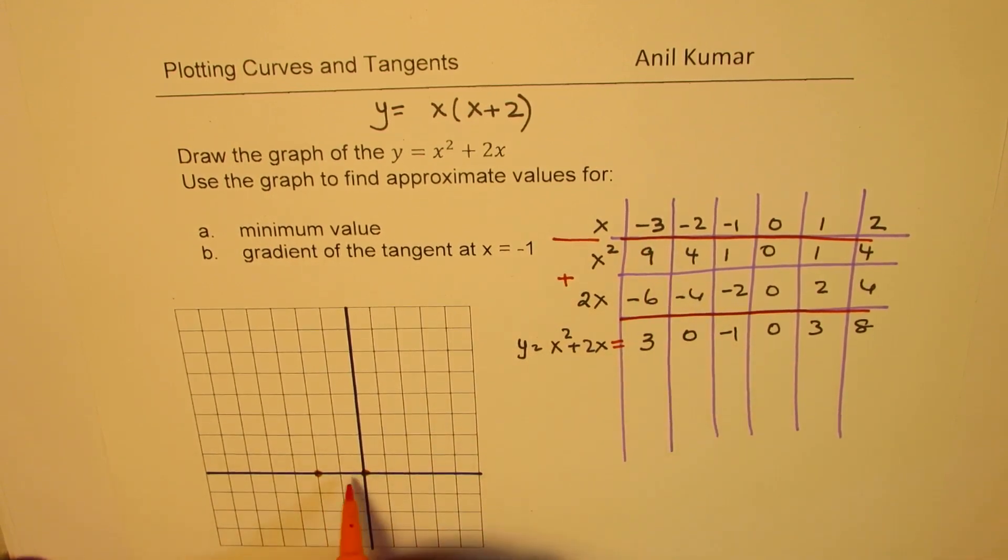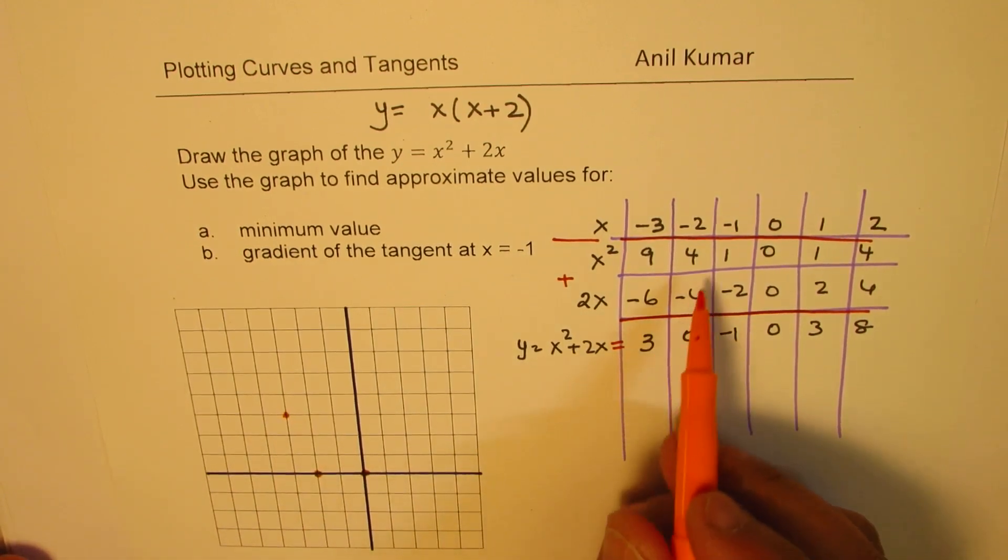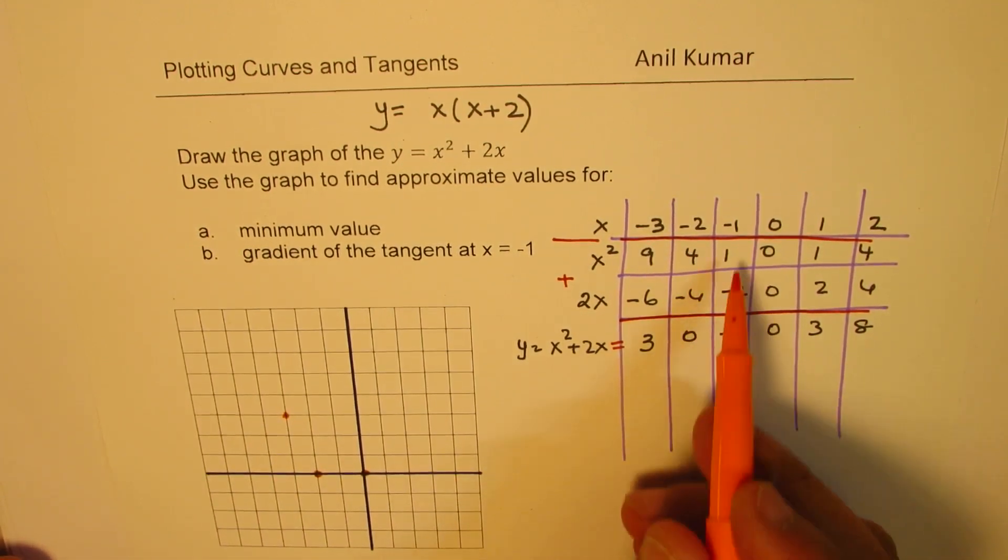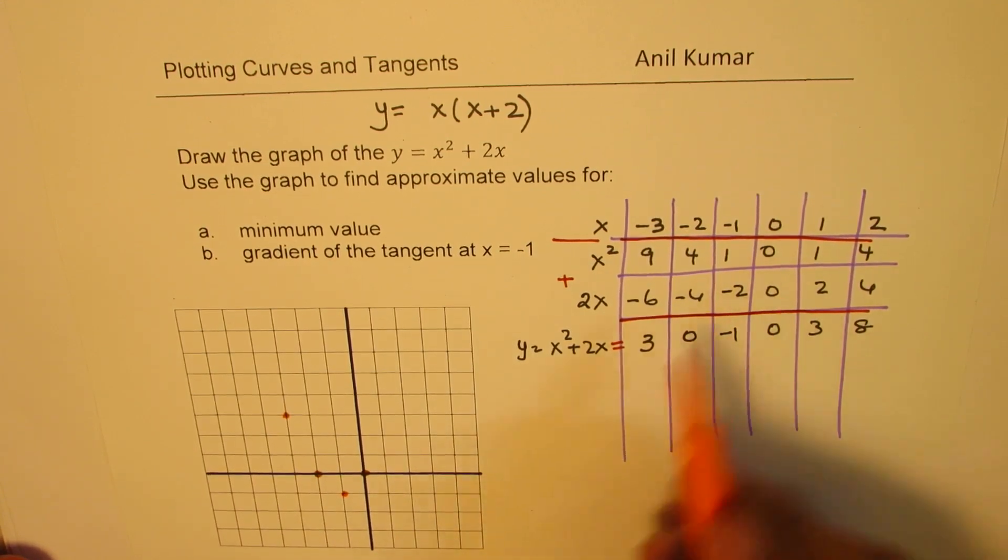-3 is 3. So this is -3, 1, 2, 3. So we get that point. And at -2, we have 0. At -1, we have -1. So that's another point. 0 at 0.